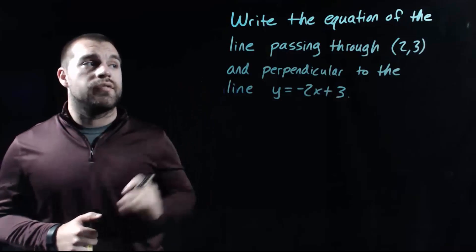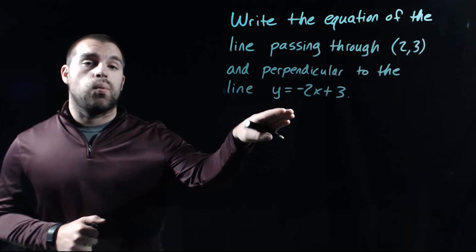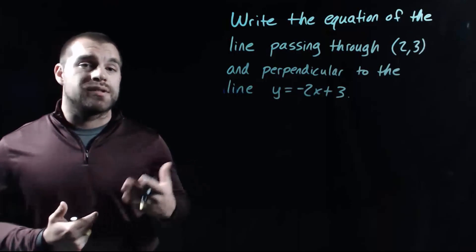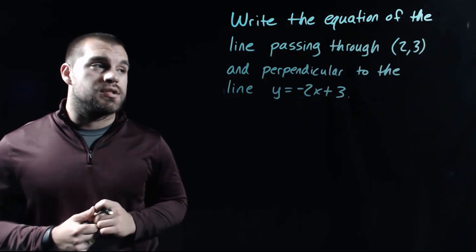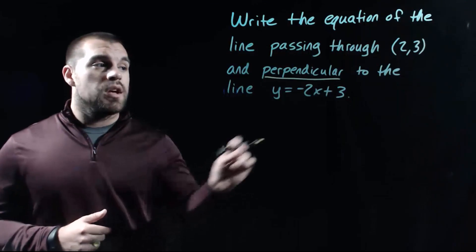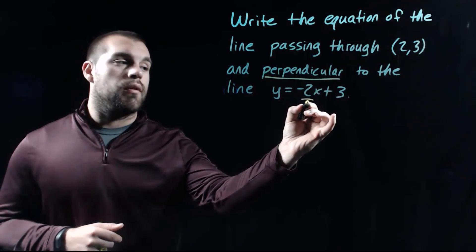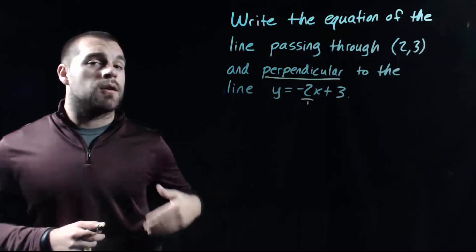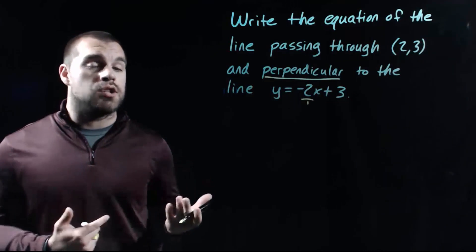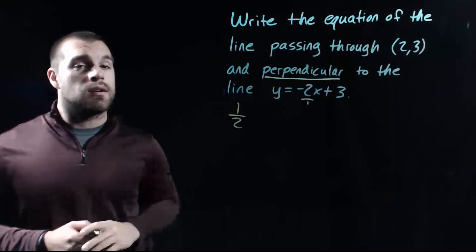In our last example, we're going to write out the equation of the line passing through the point 2, 3, but this time perpendicular to y equals negative 2x plus 3. We'll need the slope and y-intercept. For perpendicular lines, the slopes have to be opposite reciprocals. Our original slope is negative 2 — written as a fraction that's negative 2 over 1. We flip it and change the sign, giving us a slope of 1 half.